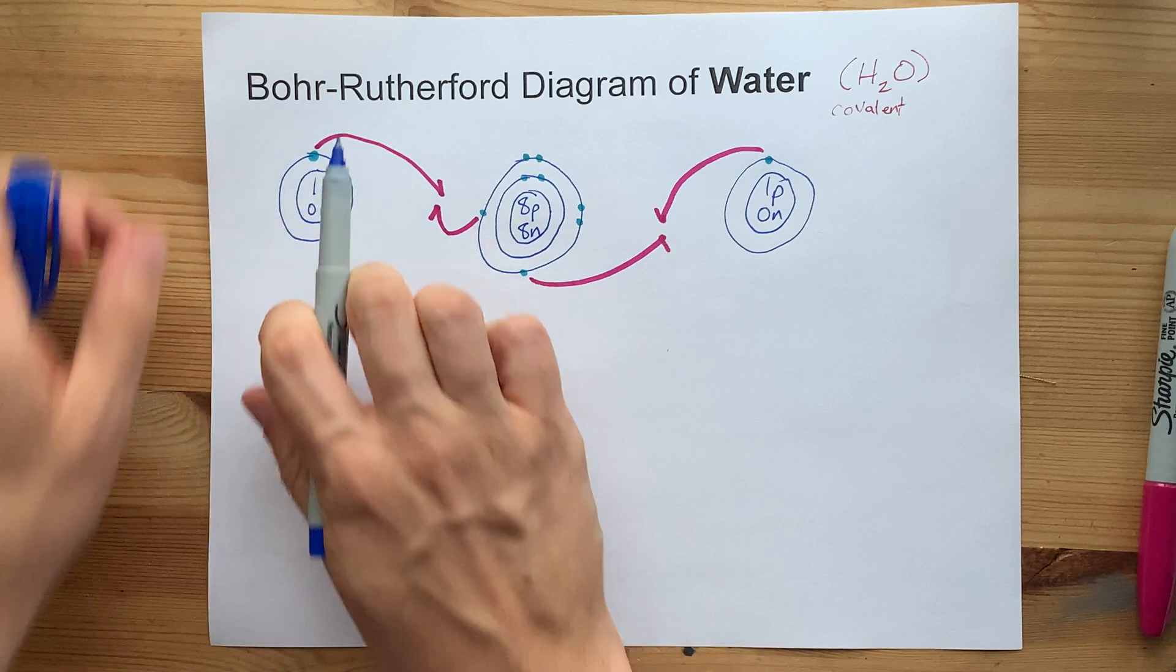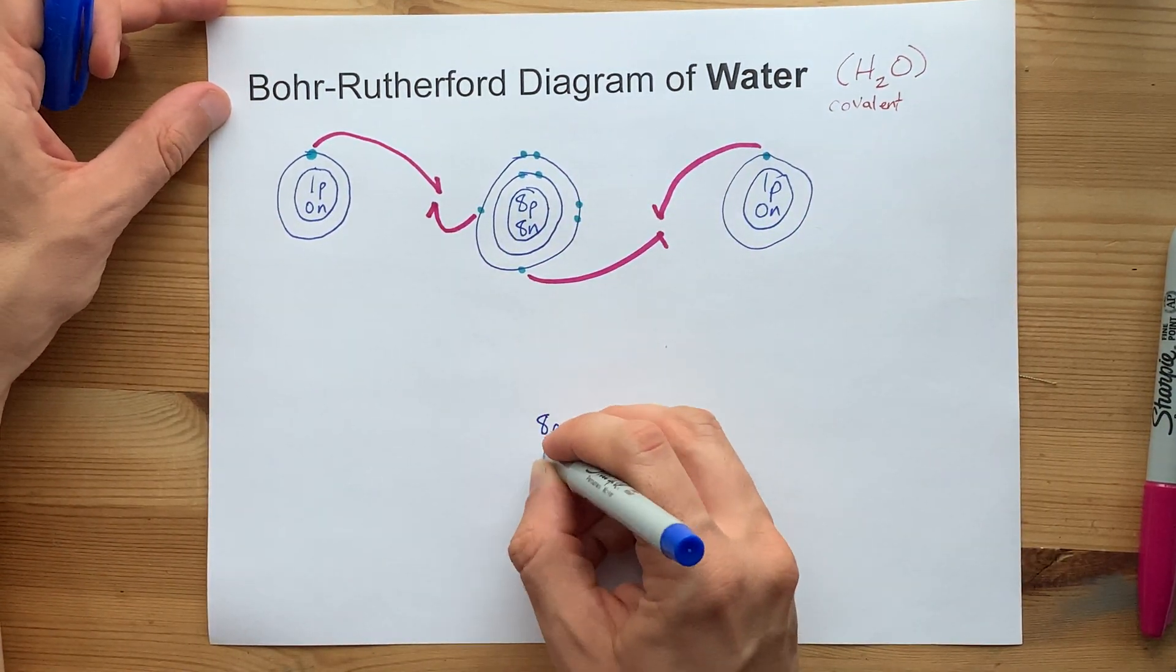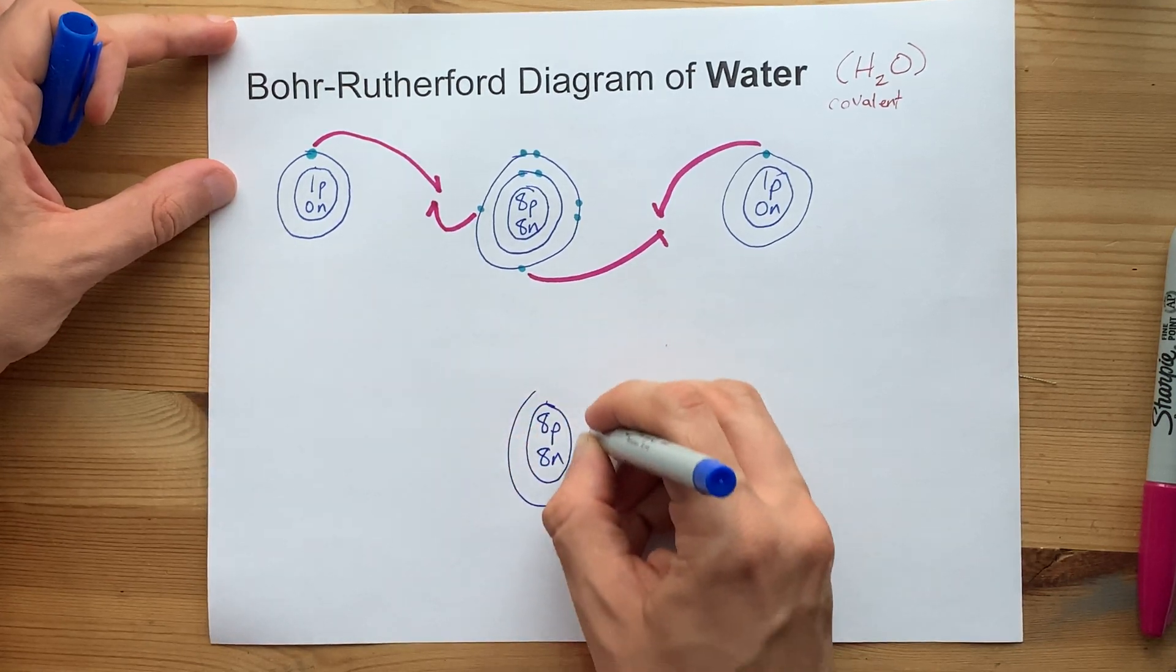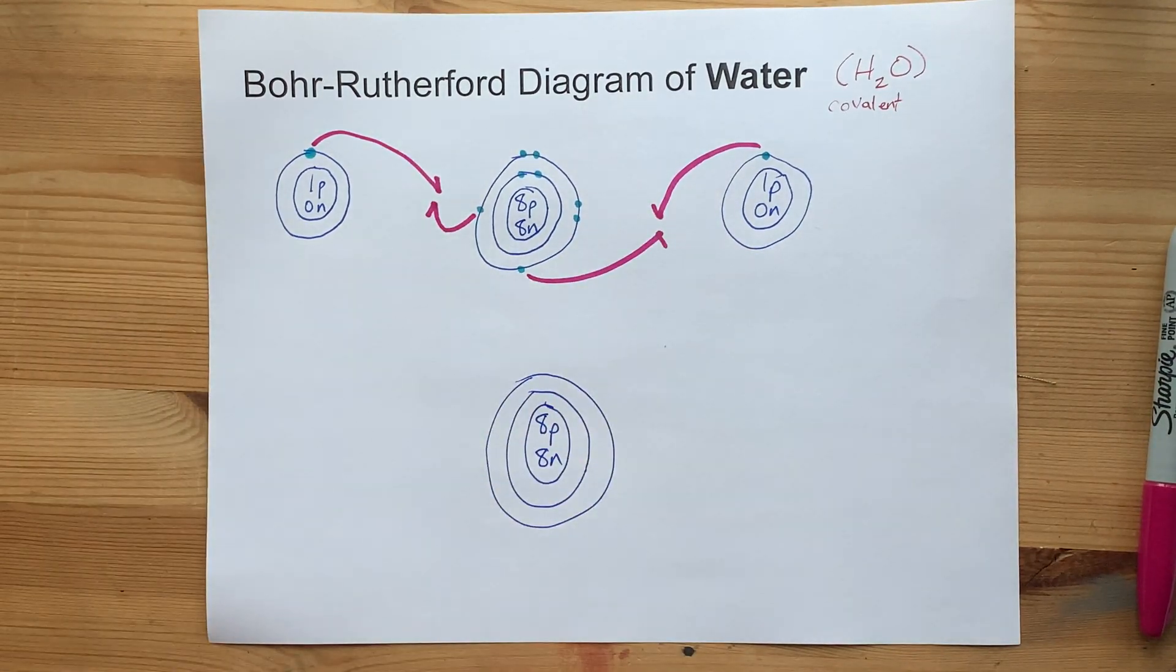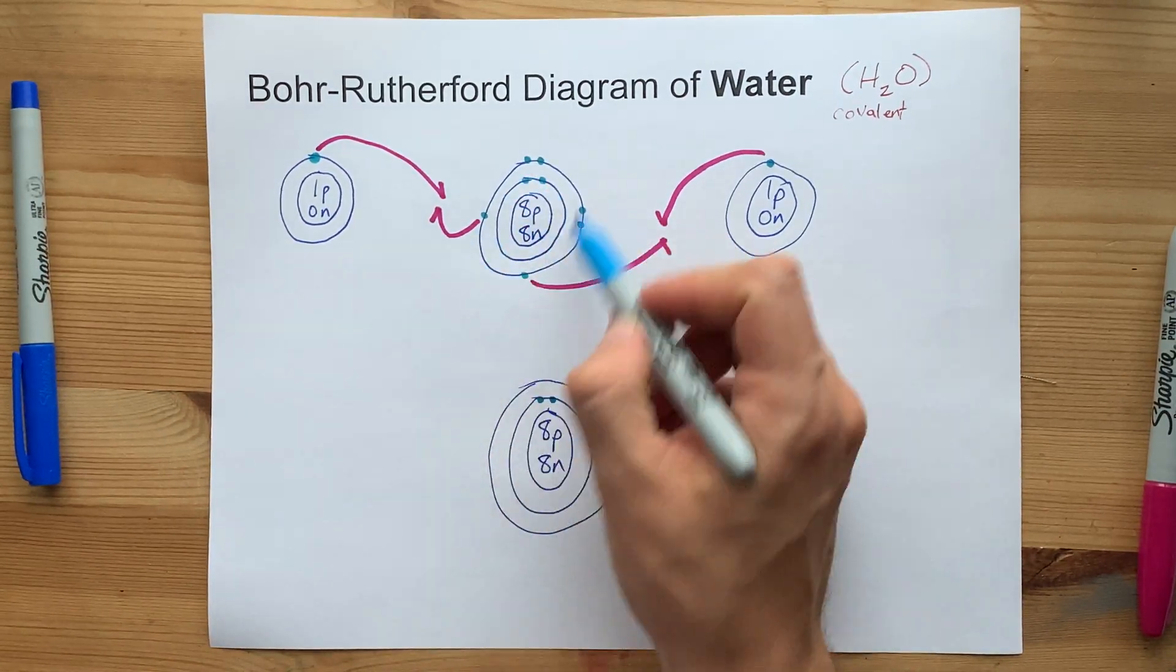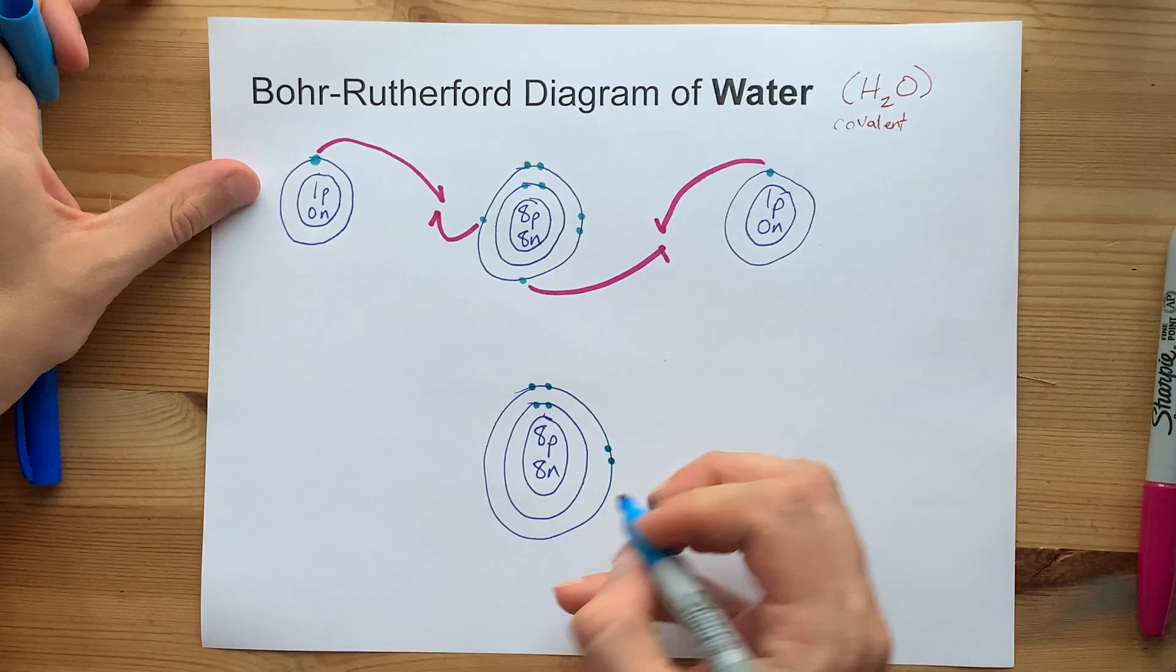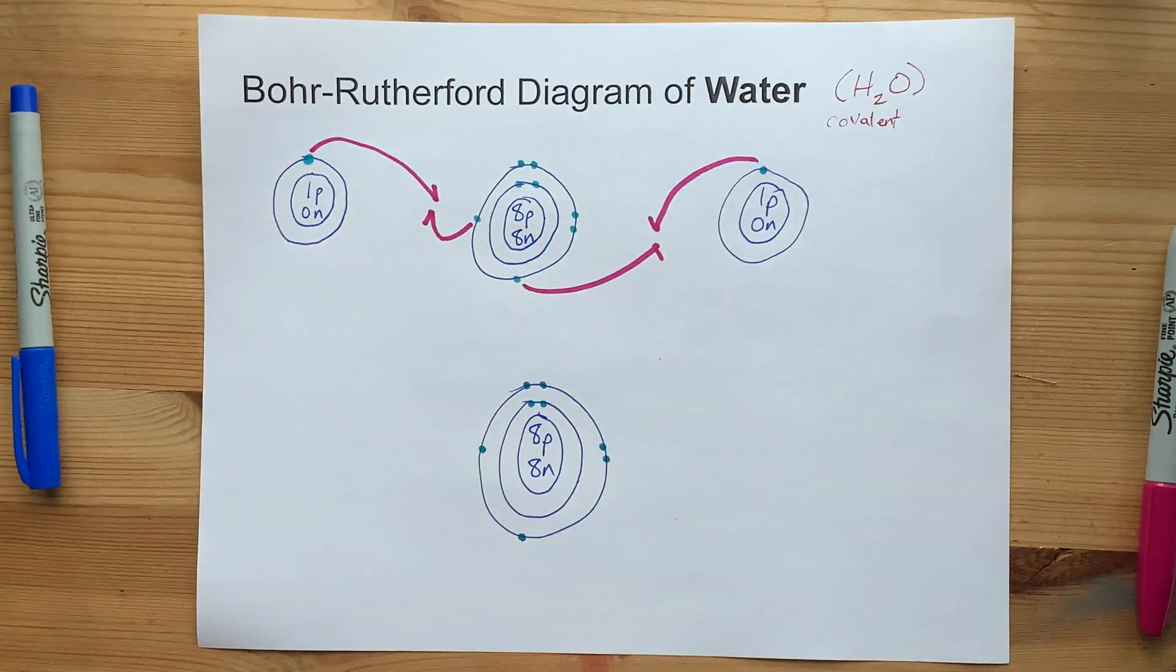Now, to show that in a Bohr-Rutherford diagram, you're going to take the central atom, in this case oxygen. You're going to copy it out for the most part. There's my first shell, there's my second shell. The first shell was never involved in bonding, not involved in bonding here because it's not the valence shell. And we've got one, two, three, four, five, six electrons that oxygen had brought.